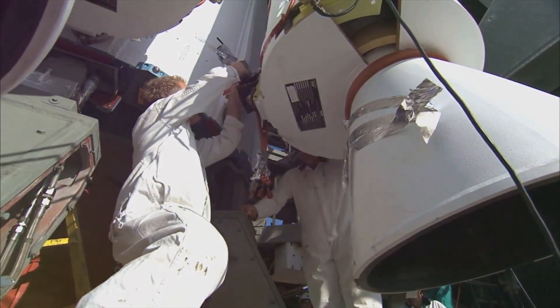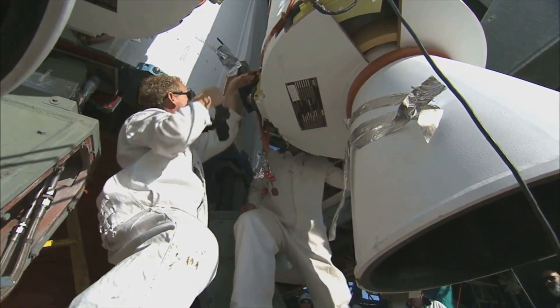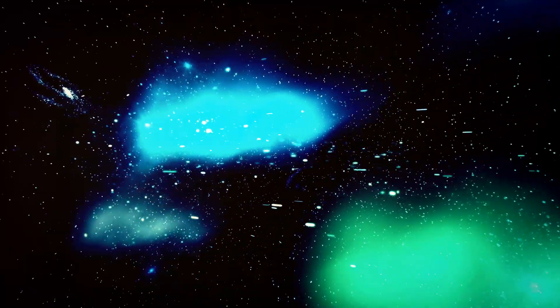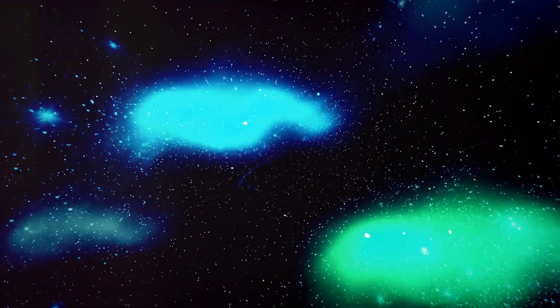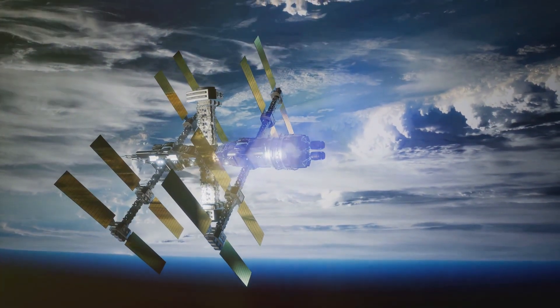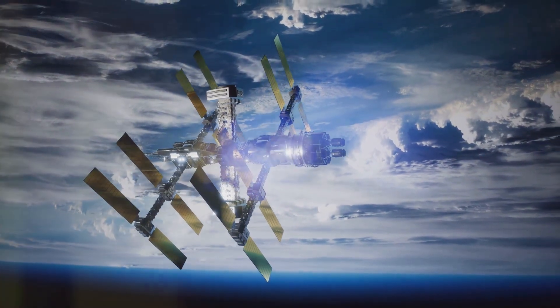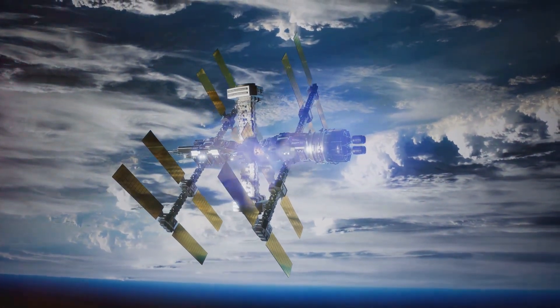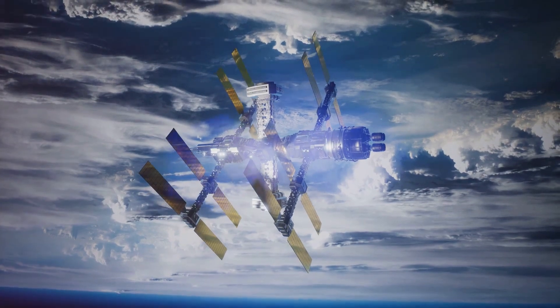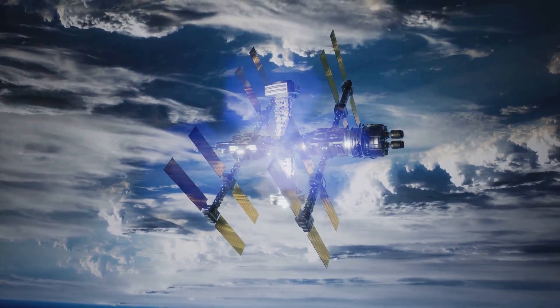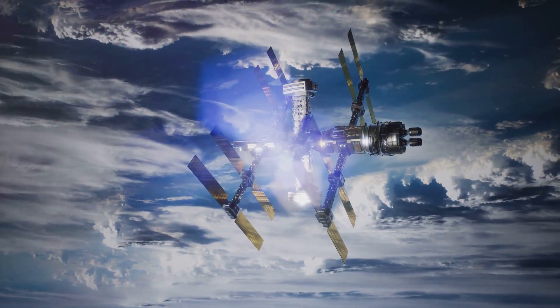But what about the smaller, harder-to-catch debris? For these, nets are being deployed. These aren't your everyday fishing nets, but special space nets. They work by ensnaring the smaller debris, creating a sort of cosmic trash bag. Once full, these nets are guided back down to Earth, where they and their contents burn up harmlessly in the atmosphere.